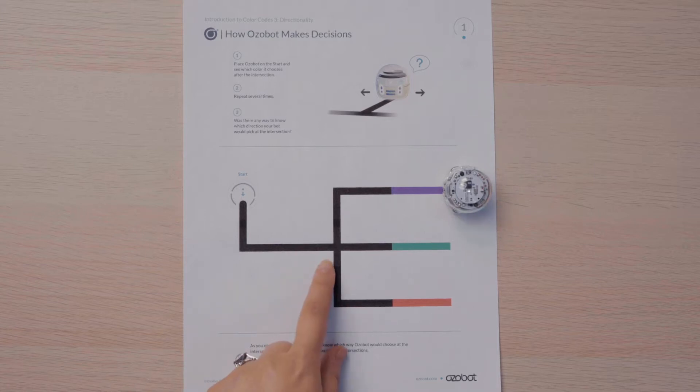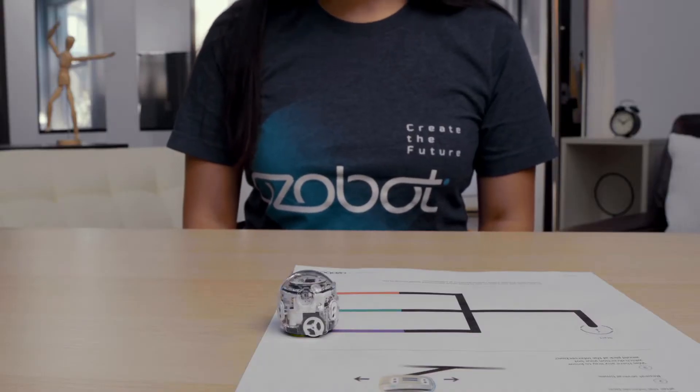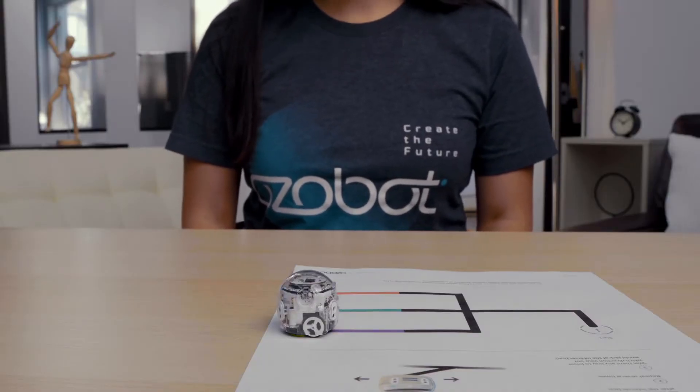When the bot reaches an intersection, it makes a random choice as to which way to travel. Today, we are going to learn how to program the bot to travel in the direction that we choose.